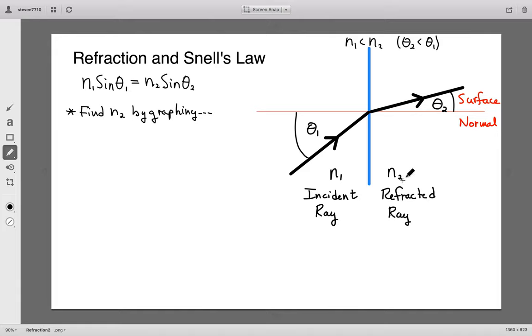We do it this way because each data point, there's going to be some error associated with it. So if we average over all the data points, which is effectively what a line of best fit does, then we'll be able to get a much more accurate value for your index of refraction N2.